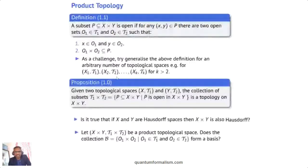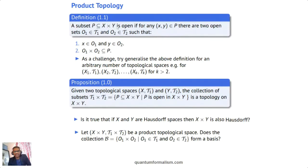Here's the definition. We say a subset P of the Cartesian product is open if, for any pair of elements (x, y) in P, there exist two open sets — one O1 in T1 and one O2 in T2 — such that x is in O1 and y is in O2, and most importantly, the Cartesian product O1 × O2 is contained in P.